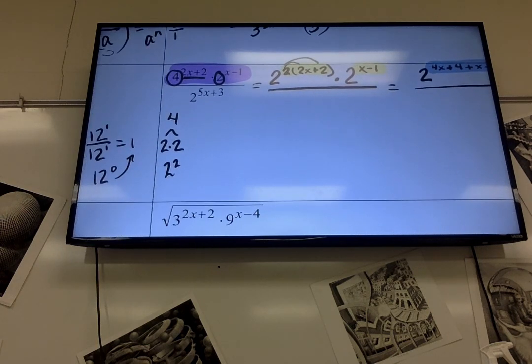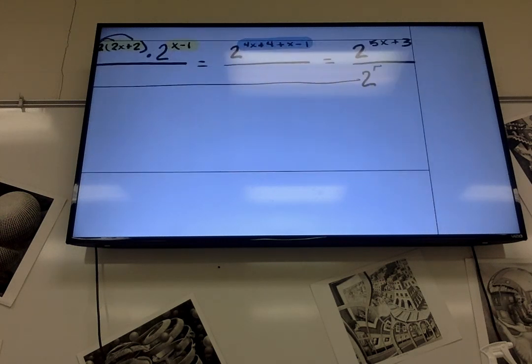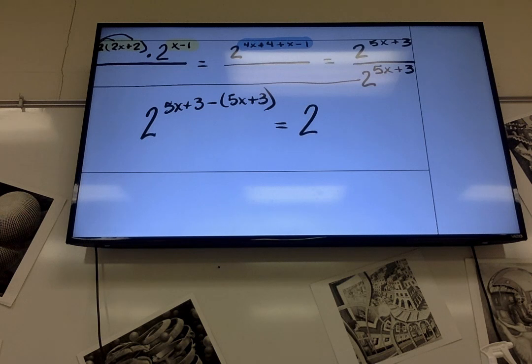Okay, so the bottom now, I'm just gonna bring that over here. I have 2, looky there, 5x minus 3. What do I do with exponents when I'm dividing? Subtract. So it's 2 to the 5x plus 3 minus 5x plus 3, so it'd be 2 to the zero, which is 1. And it makes sense because you're dividing the exact same thing by the exact same thing. Two things that are the same, and when that happens, it's always 1 when you're dividing.